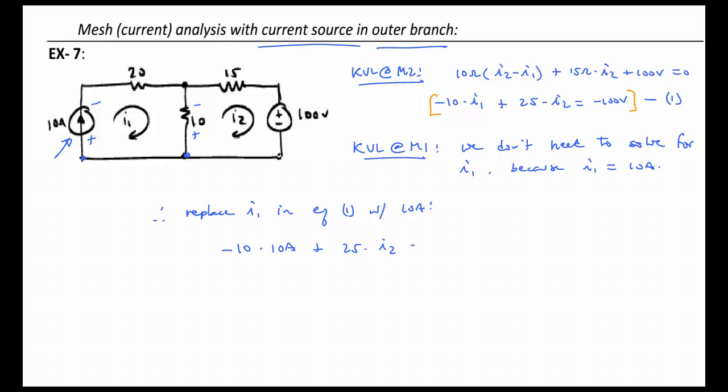So we'll have minus 10 times 10 amps plus 25 times I2 equal to minus 100. Interestingly, this will result in 25 I2 equal to zero, and so therefore I2 is equal to zero.